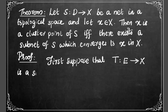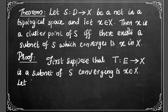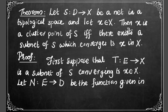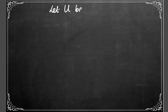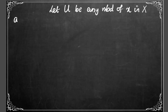...t from E to X is a subnet of the given net s, and that t converges to the point x. Let the function N from E to D be the function given in the definition of a subnet. Now we need to prove that x is a cluster point of the net s. For this, let us consider an arbitrary neighborhood of the point x.